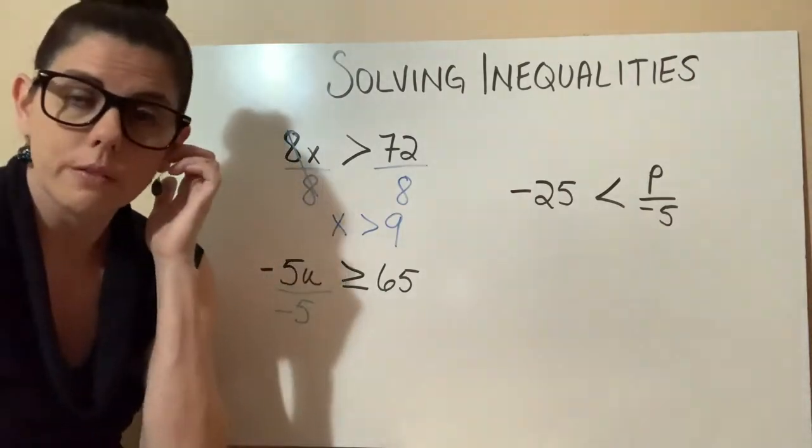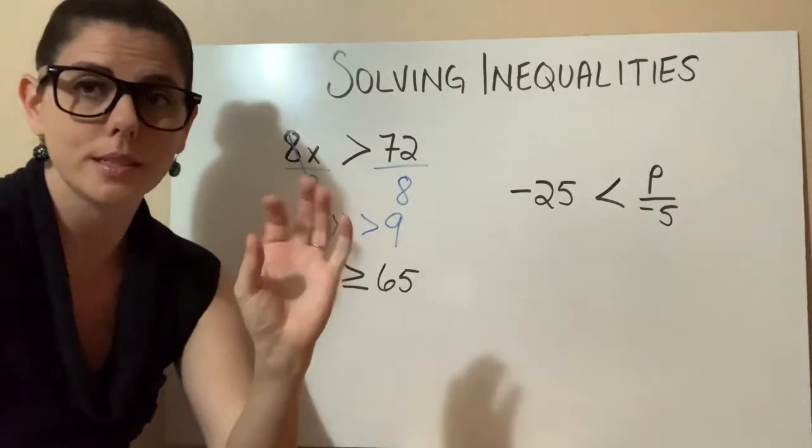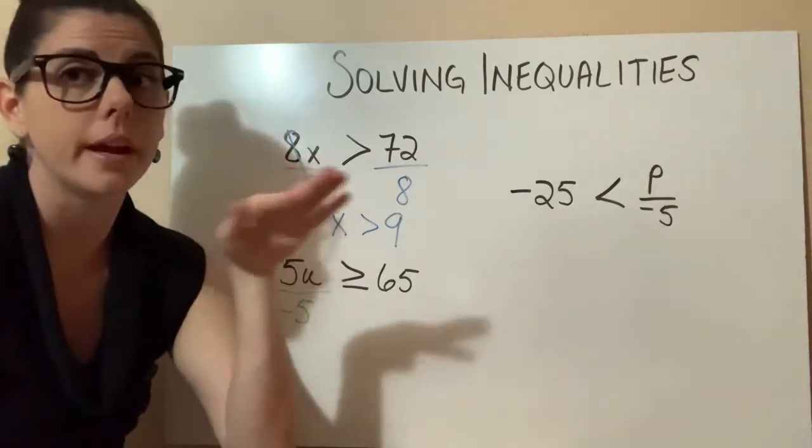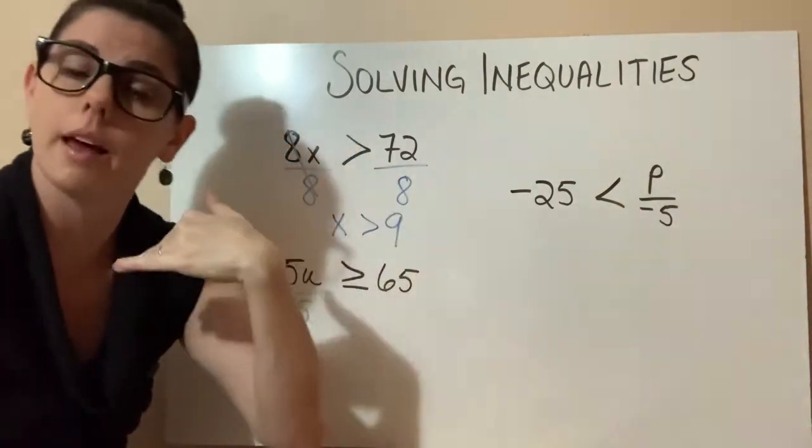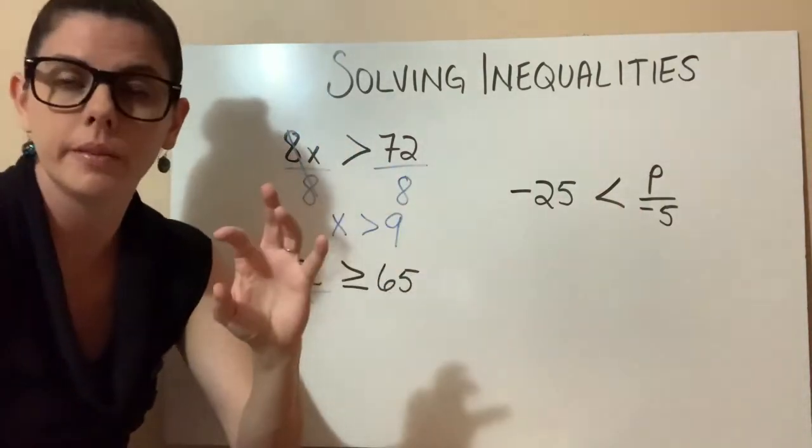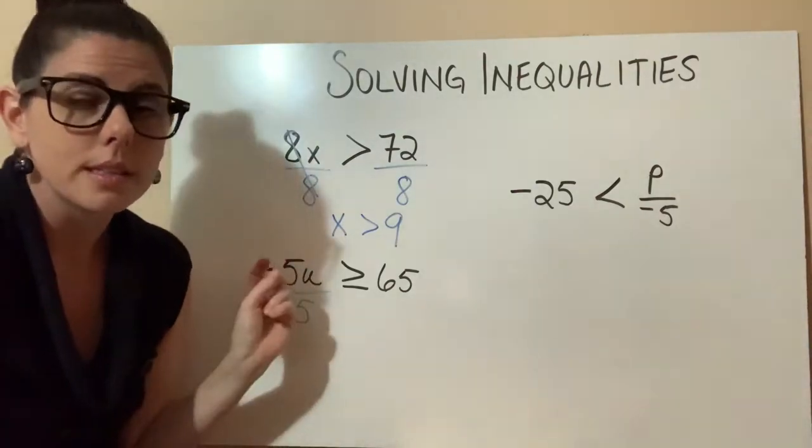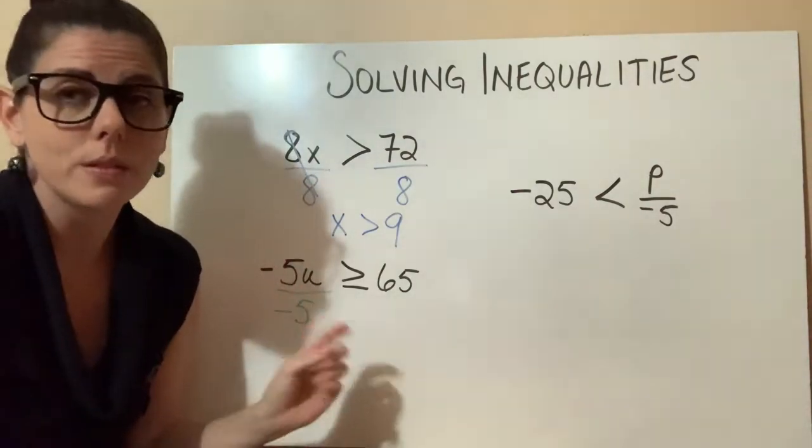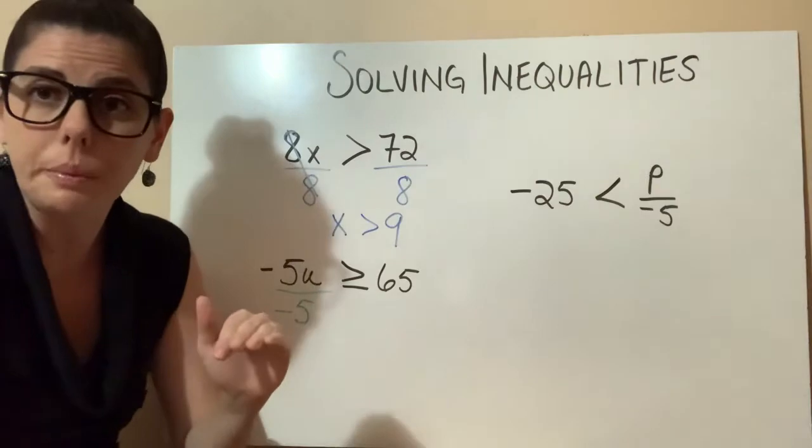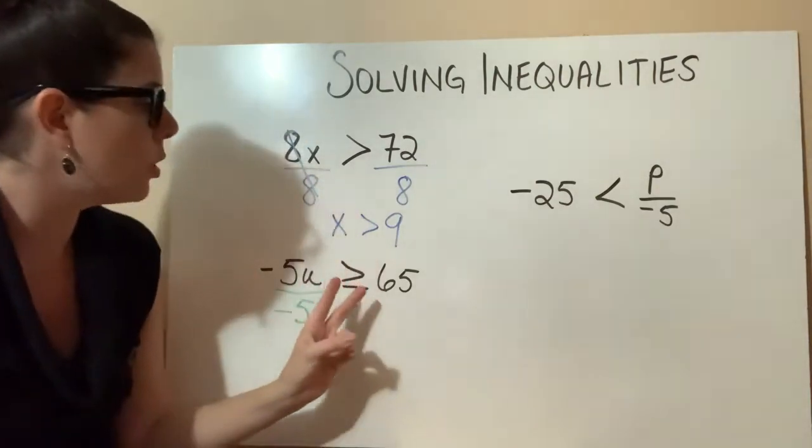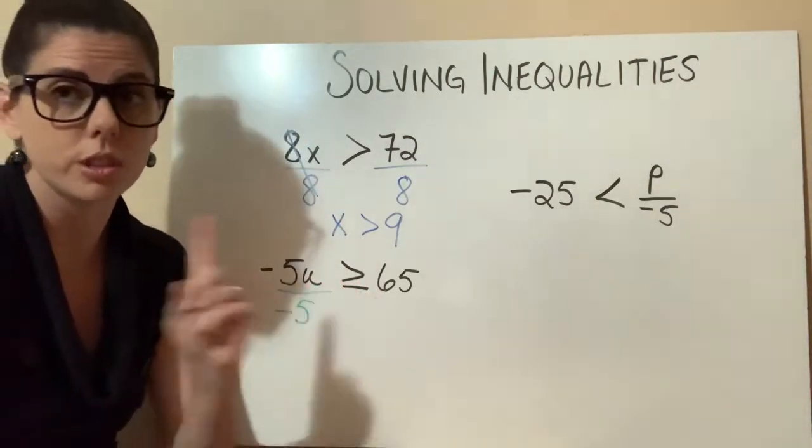Remember, in other videos we've talked about how that minus sign means change. On the number line, it means instead of going to the right, we're going to the left. It's changing direction. This is the same thing. This negative sign, because you're dividing or multiplying by a negative, it's going to change this sign.